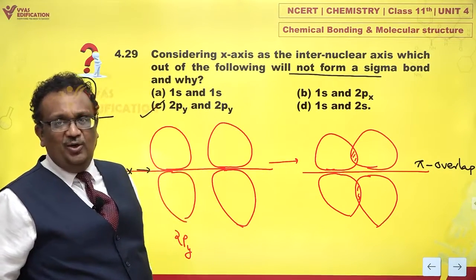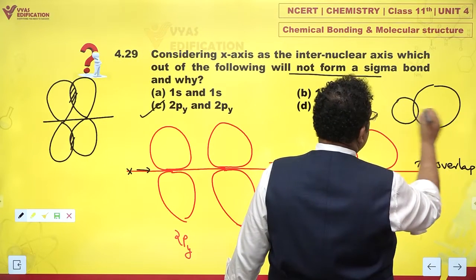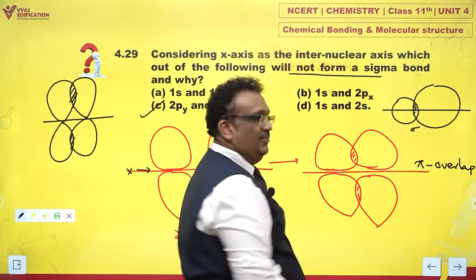What about d? 1s and 2s? It doesn't matter. s is always spherical. 1s and 2s. 2s is just bigger. But will I get a sigma bond? I get a sigma bond.